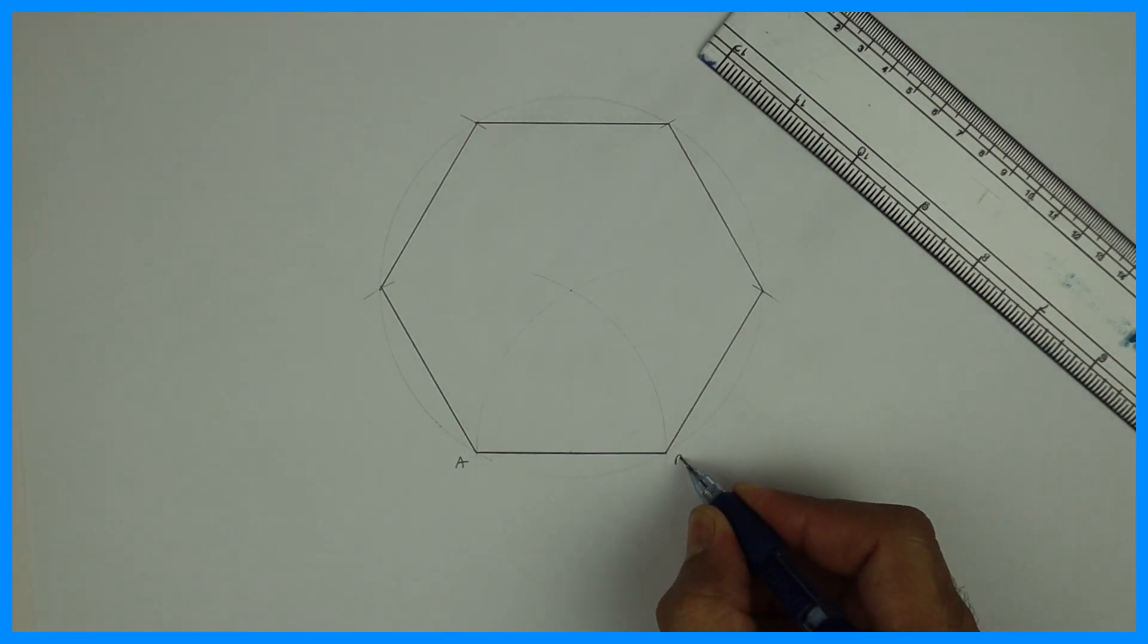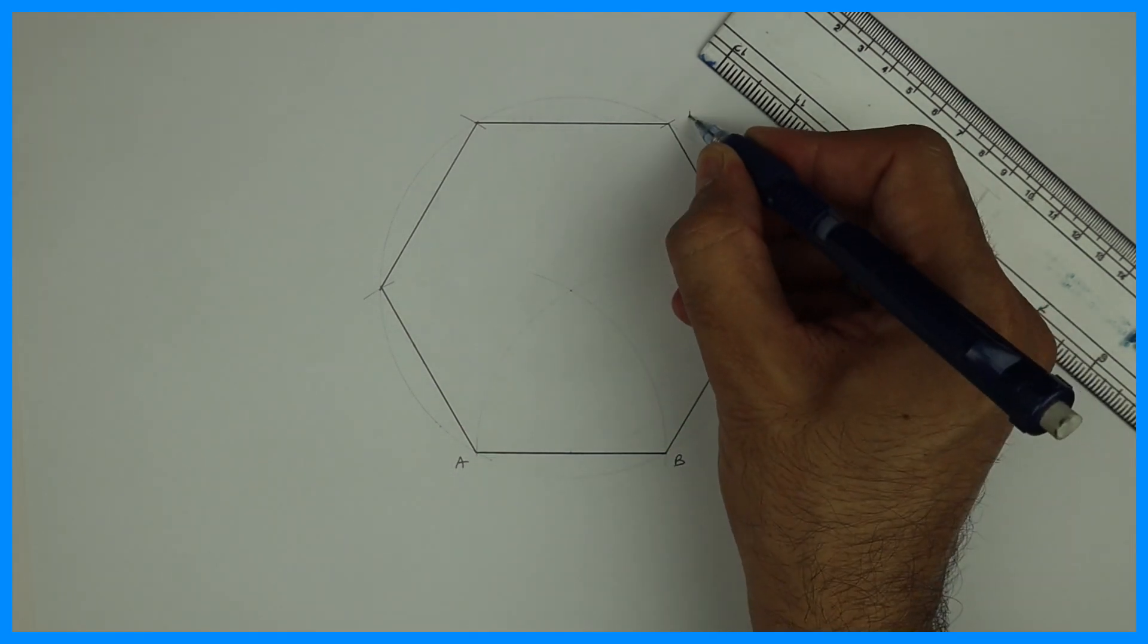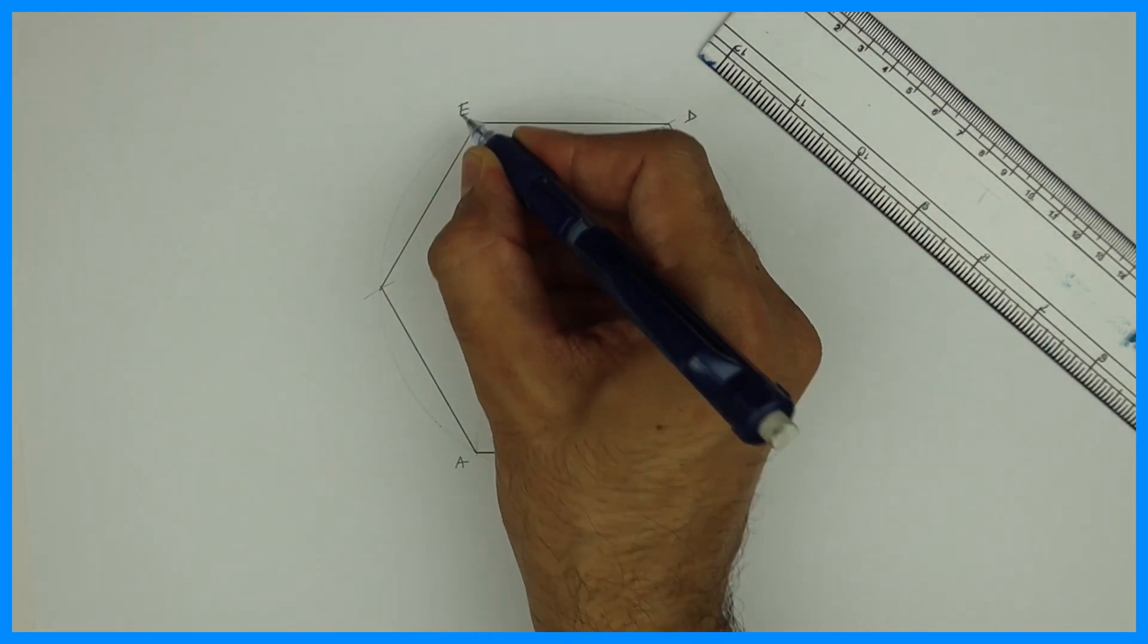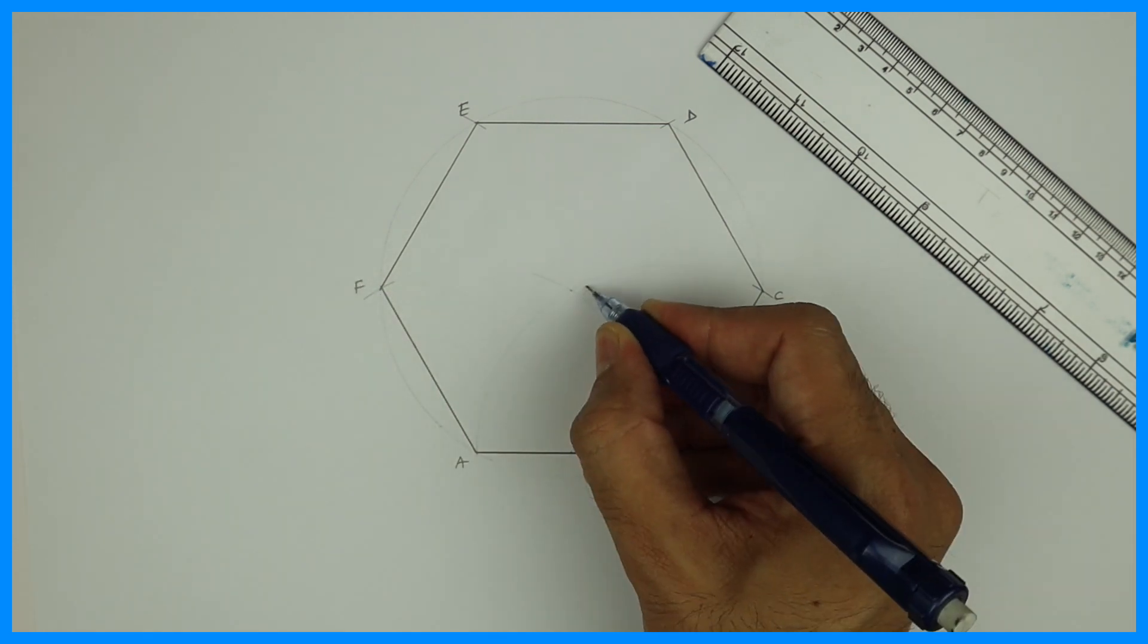So this is A, B, C, D, E, F, and this is O.